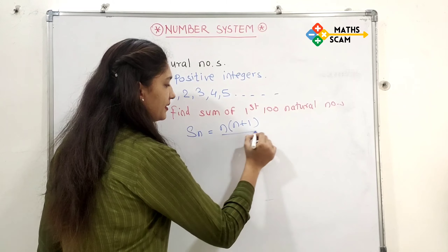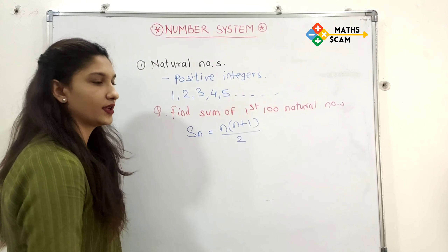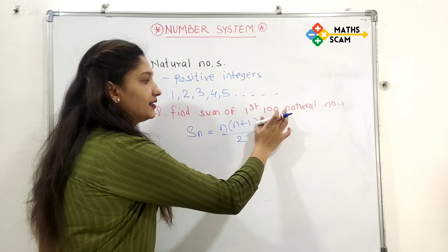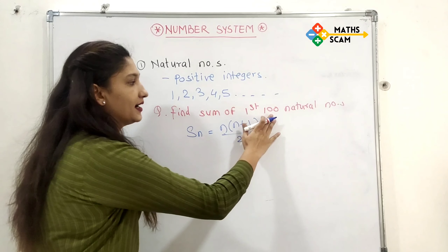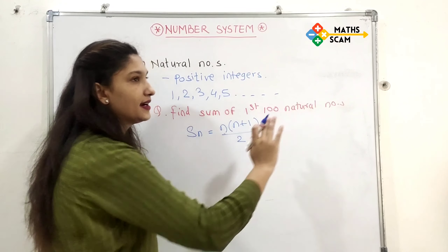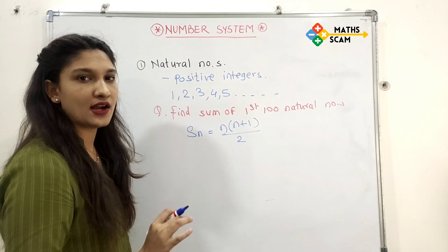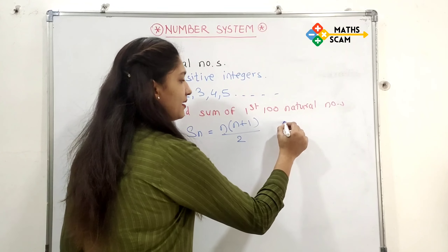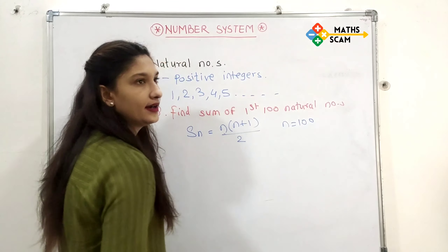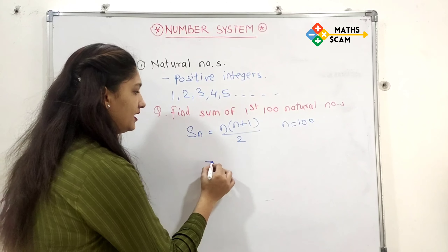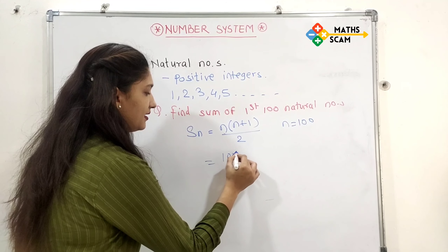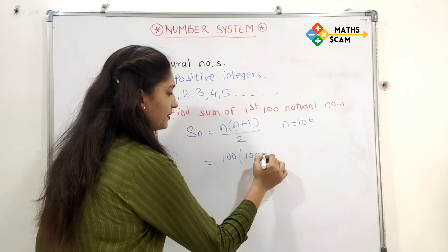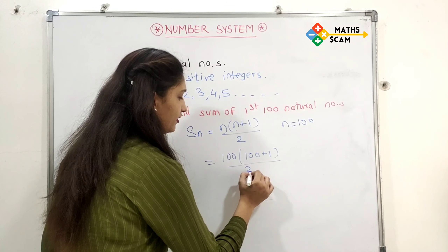The formula involves dividing by 2. What is n? n is the last number of the series. For the first 100 numbers, the last number is 100, so n equals 100. Put that in the formula: n into (n plus 1) divided by 2, which is 100 into (100 plus 1) divided by 2.